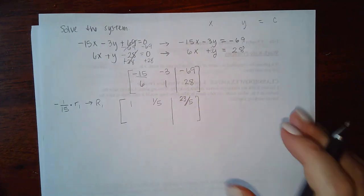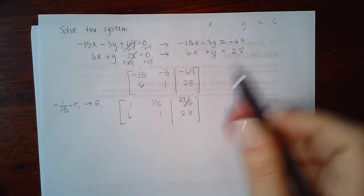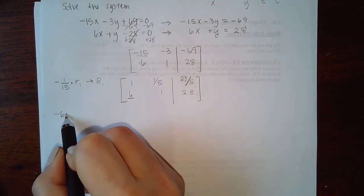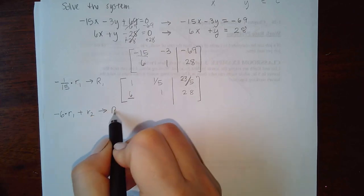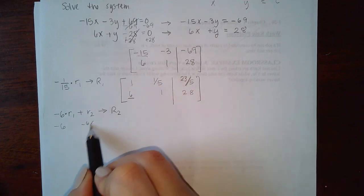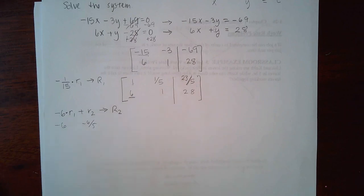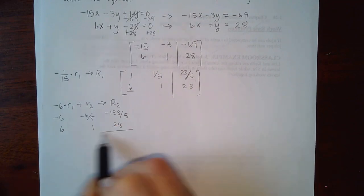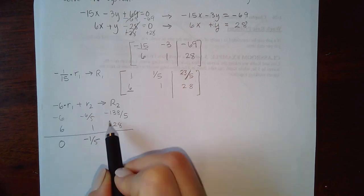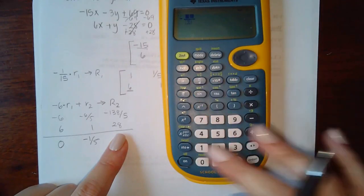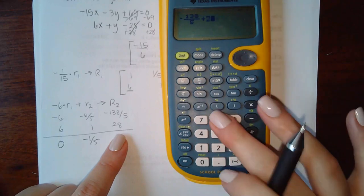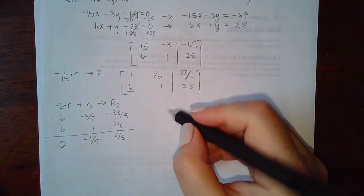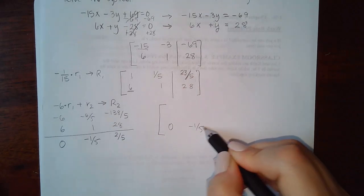Rewrite row 2 as is. Now turn the 6 into a 0 by computing -6 × row 1 + row 2 to get the new row 2. Multiplying each entry of row 1 by -6 gives an ugly number for the constant; adding row 2 underneath yields 0, then -1/5, and the constant works out to 2/5. So the new row 2 is [0, -1/5 | 2/5].